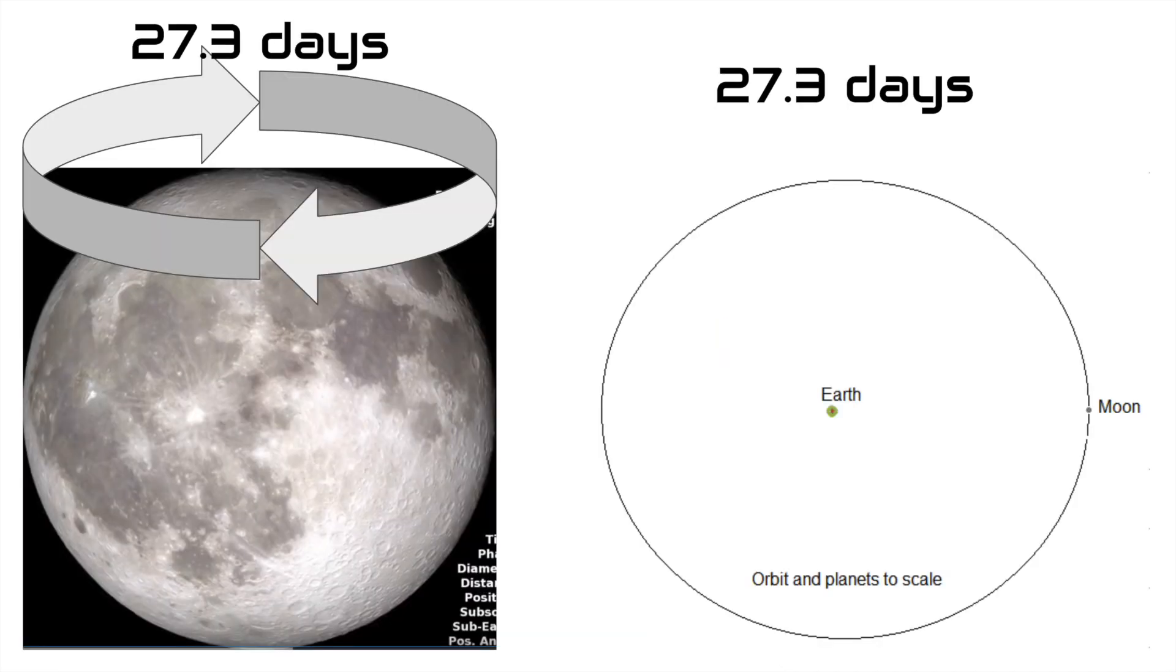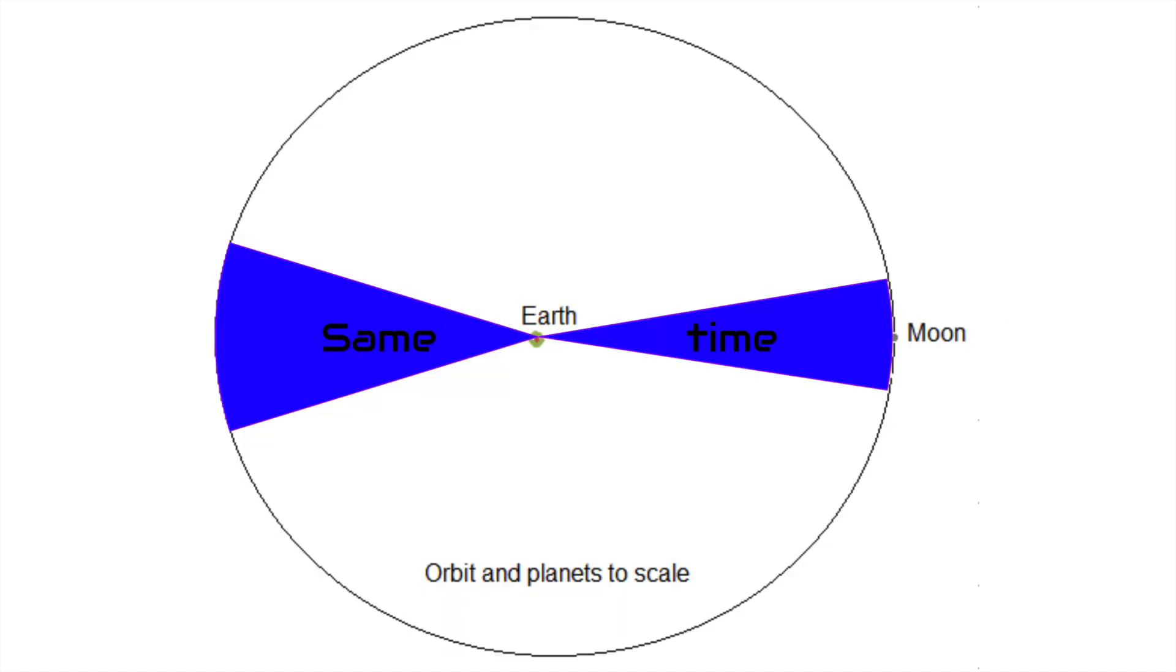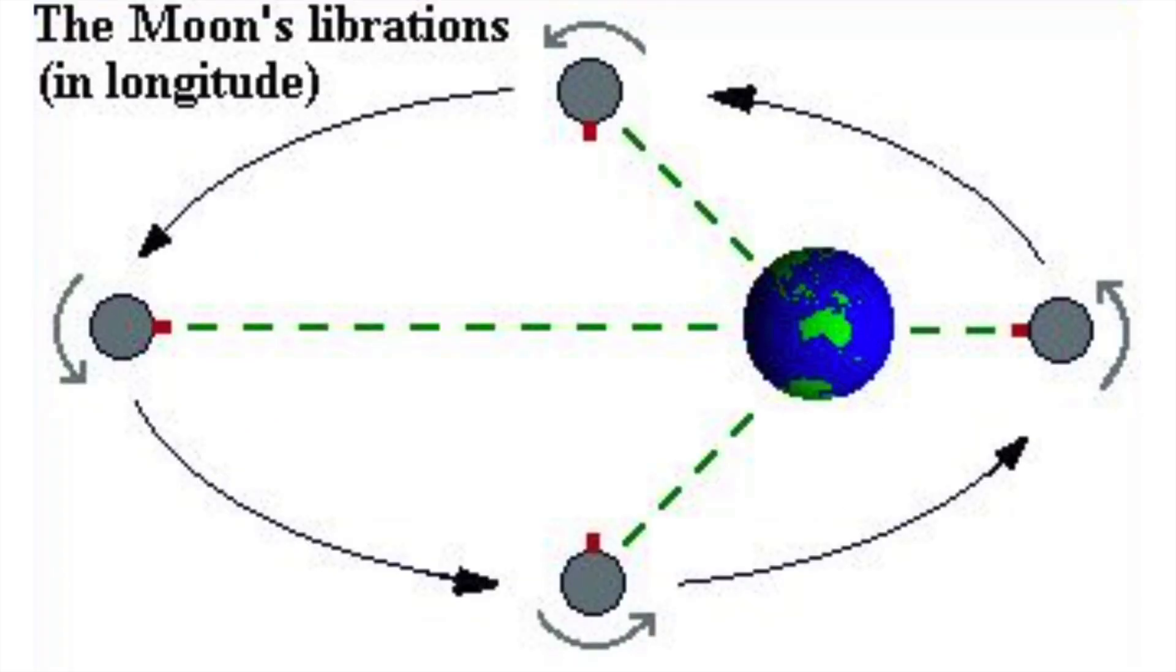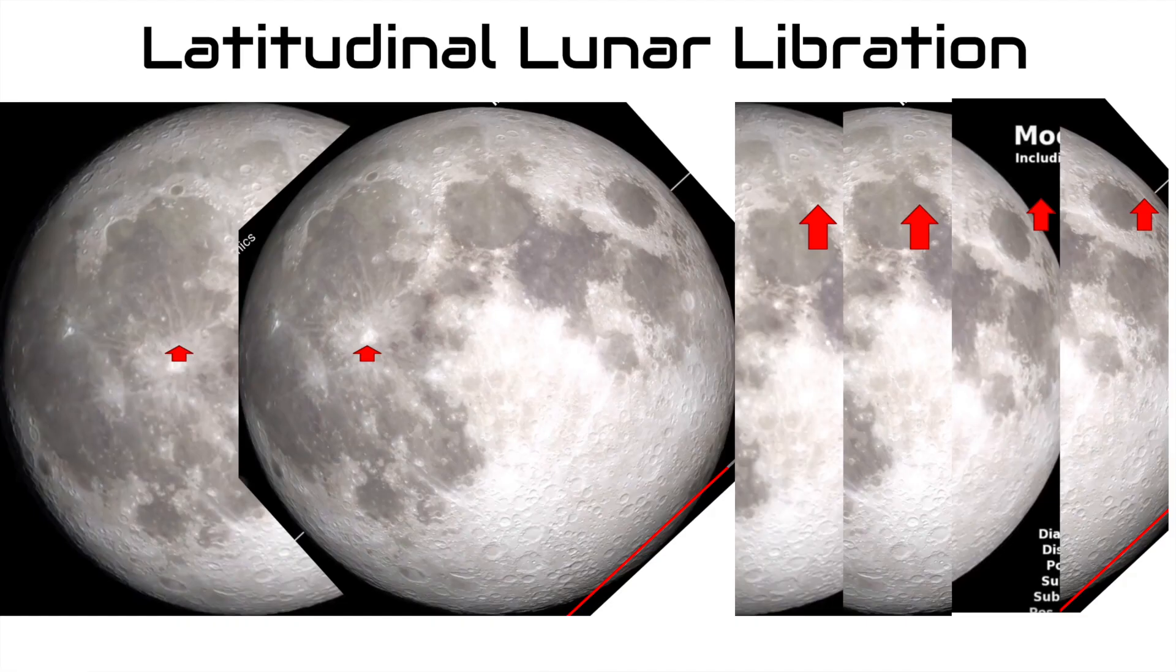The moon's rotation does perfectly match the amount of time it takes to orbit once, but with the elliptical orbit, the moon moves faster when it is closer to Earth and slower when it is further away. With this effect, the mostly constant rotation of the moon can lag behind or in front of its changing orbital speed.